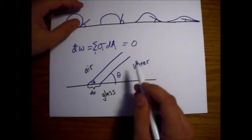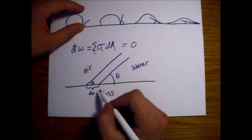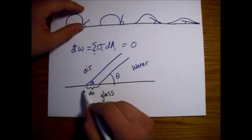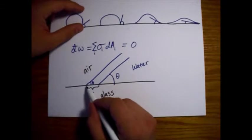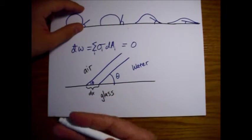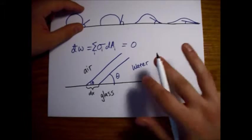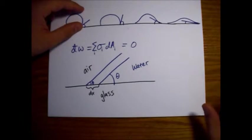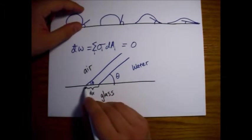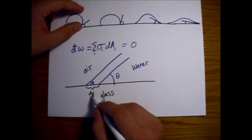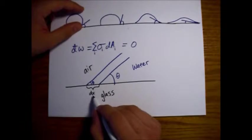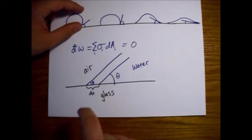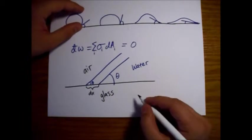So, the easy one first. If the water moves this way, then the area is going to change by, just say we have some depth to it, but we're just dividing it all out. The area between the water and the glass will increase by dx, because the water is moving onto more of the glass.